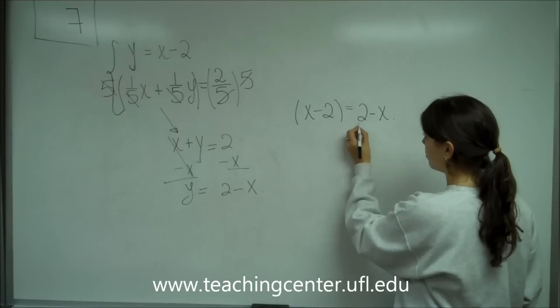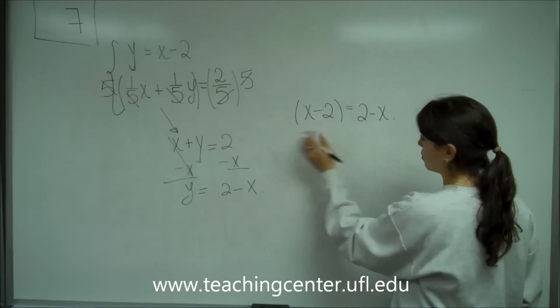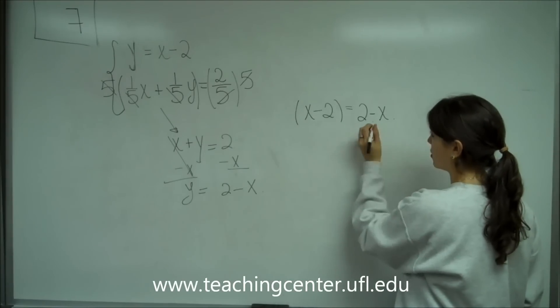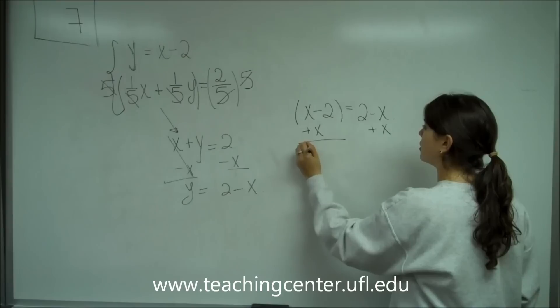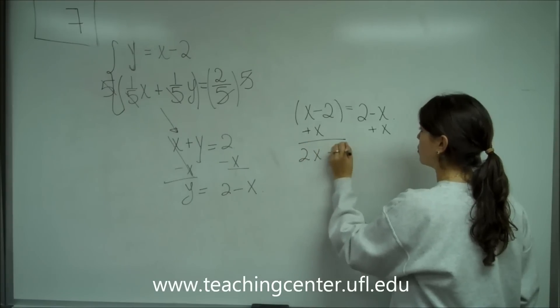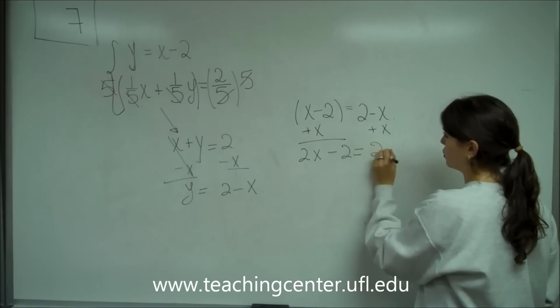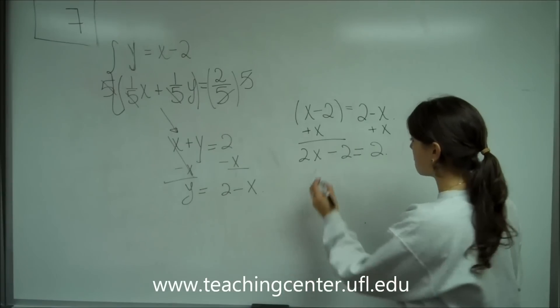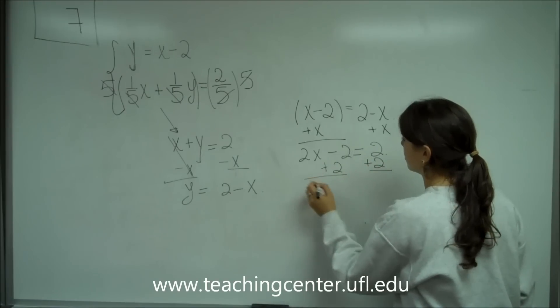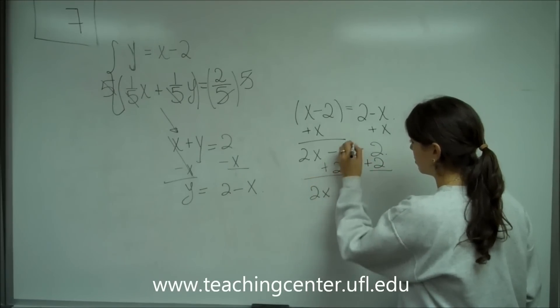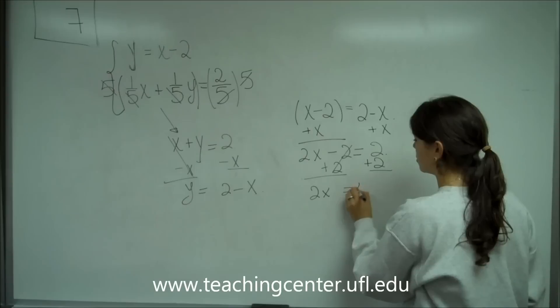And so we're going to put x's on one side and numbers on the other side. So let's add x to both sides. And we get 2x minus 2 equals 2. And then let's add 2 to both sides. And we get 2x. This cancels. Equals 4.